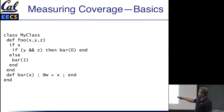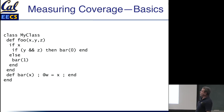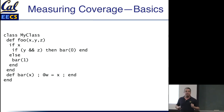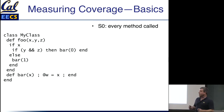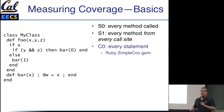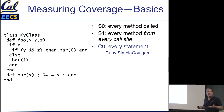One possibility is exhausting all tuples of inputs x, y, and z — but if they're 32-bit integers, that's clearly not practical. We could talk about values that might cause changes in the code. The simplest metric is: have I at least executed every statement once — have I touched every line? The gem we'll be using for coverage, called SimpleCov, basically measures that: have you touched every line? That's called C0 coverage.